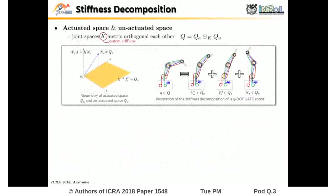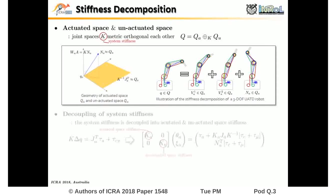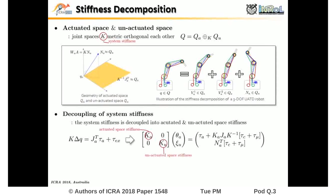To do that, first, based on quasi-static modeling of UATD robot, we decompose the joint space Q into two spaces which are K-metric-orthogonal each other. We found out that this decomposition also decouples the system stiffness and we call this the stiffness decomposition.